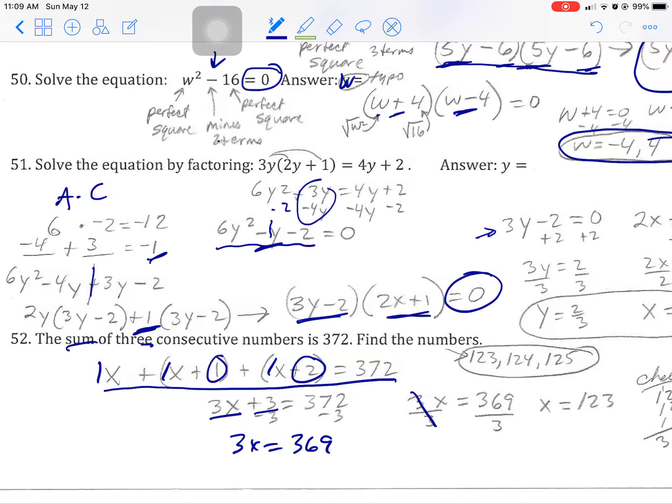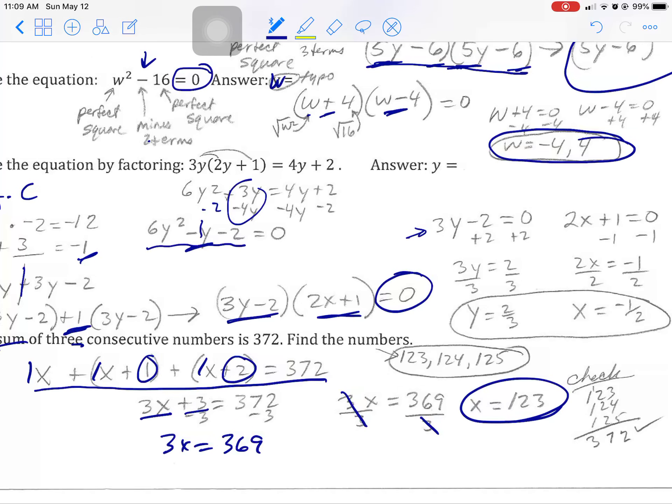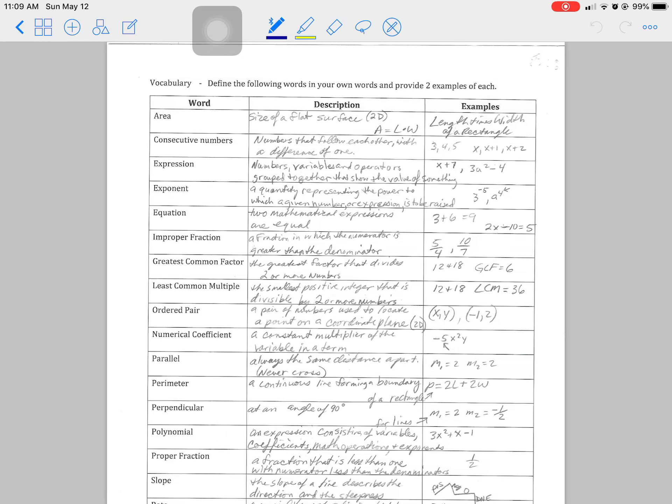To get the X alone, divide both sides by 3, and you get X. That means the first of the three numbers, the three consecutive numbers, is 123. If you add 1, you get 124. You add 2 to 123, you get 125. Now, this last page looks a little intimidating.